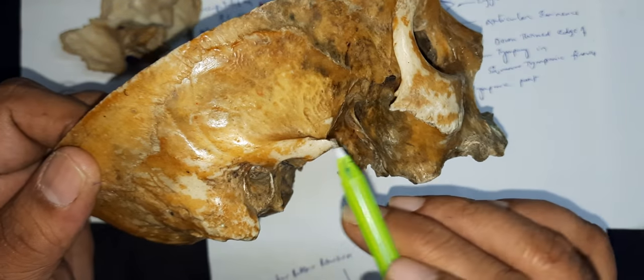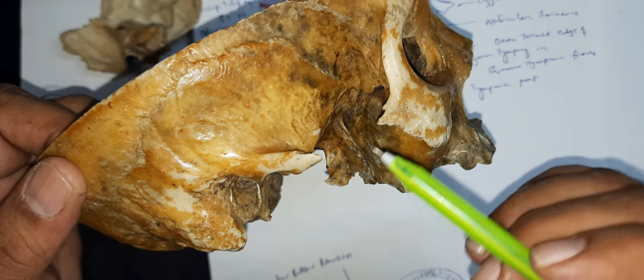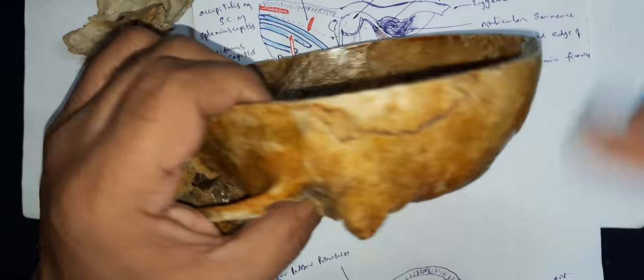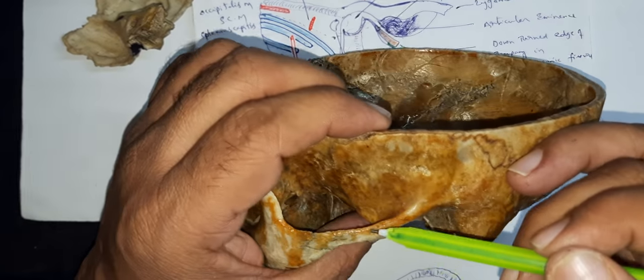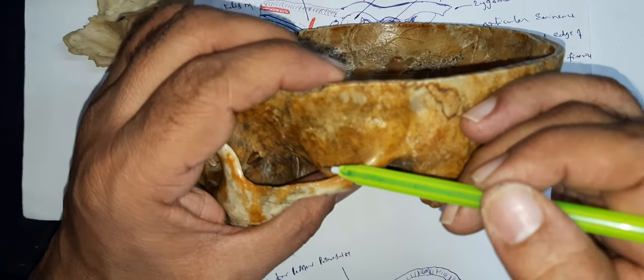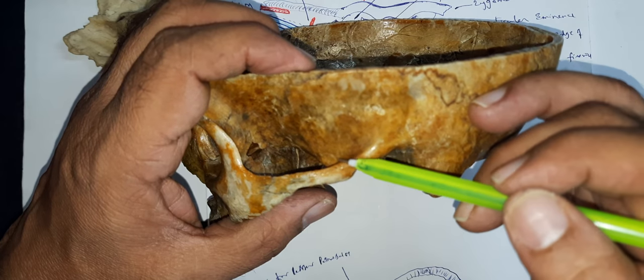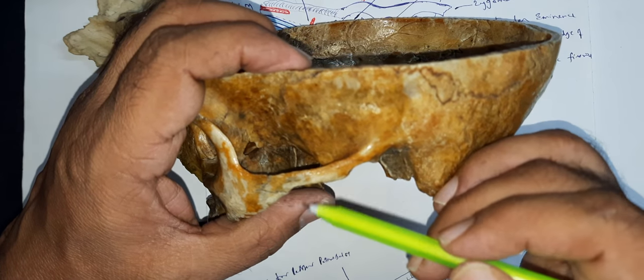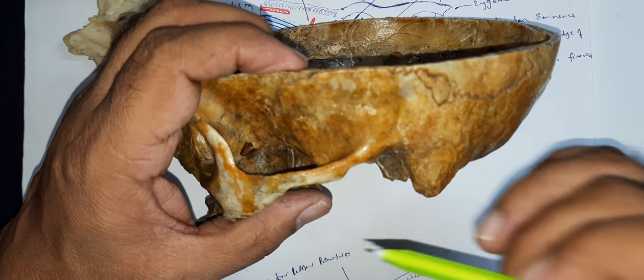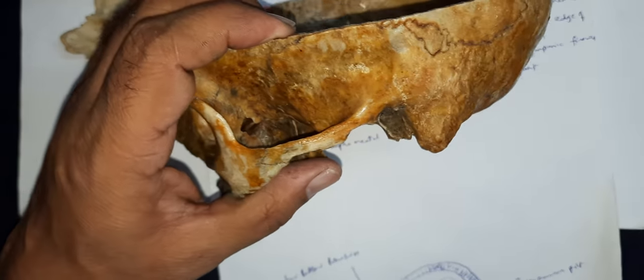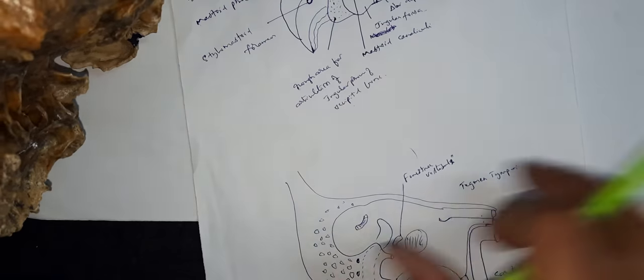To the zygomatic process: to the upper margin, we have the attachment of the galea aponeurotica and the temporal fascia, and to the lower margin the masseter muscle is attached.